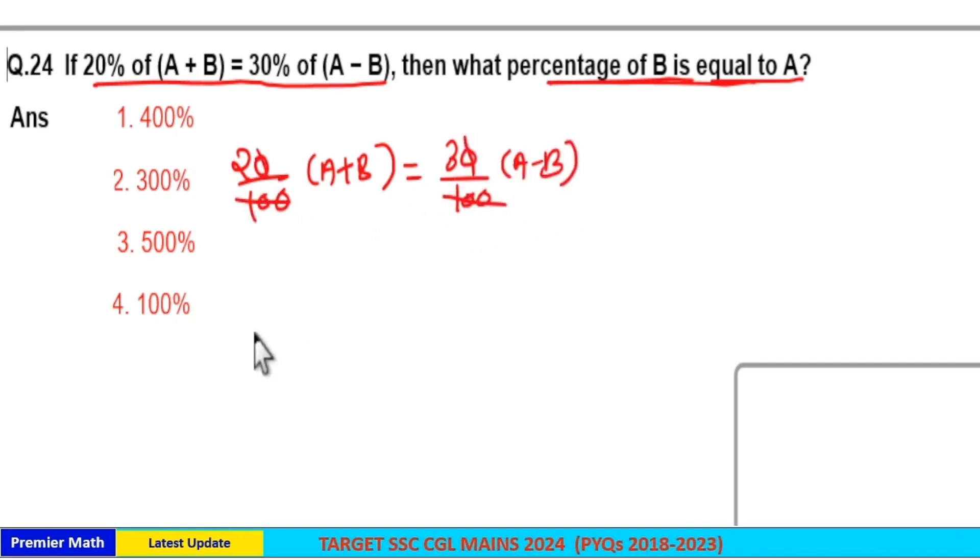Percentage cancel, 0 cancel. 2a plus 2b is equal to 3a minus 3b.